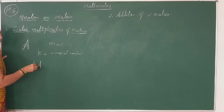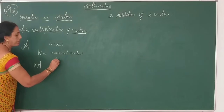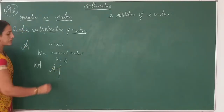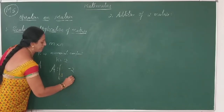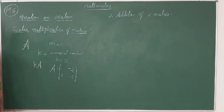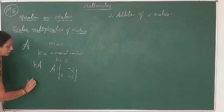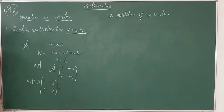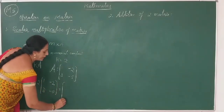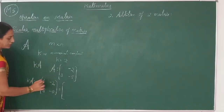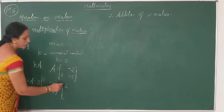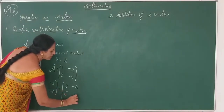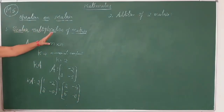For example, let A be a matrix with elements 1, −2, 3, and −5 — a matrix of order 2×2. Then K into A, where K equals 2, means 2 multiplied into the matrix. All elements of the matrix are multiplied by 2: 1×2=2, −2×2=−4, 3×2=6, −5×2=−10.